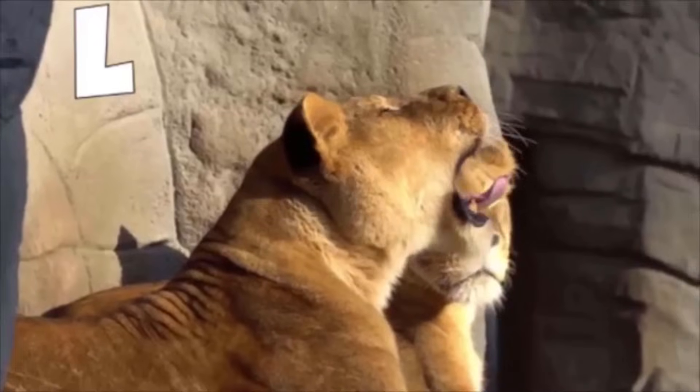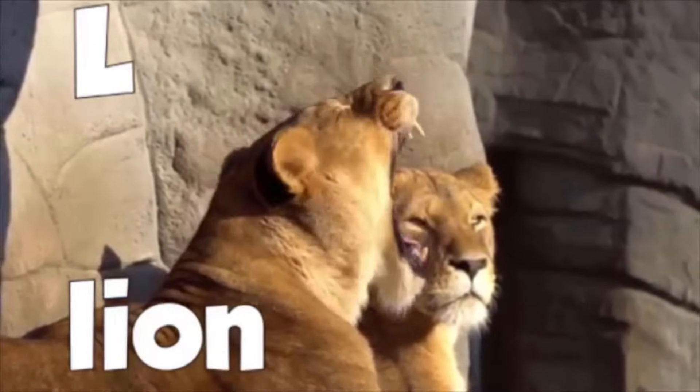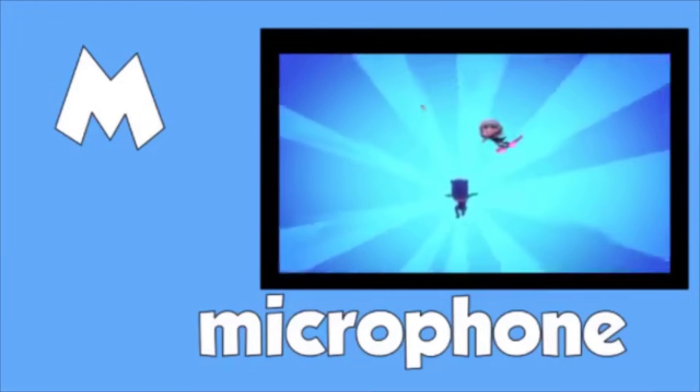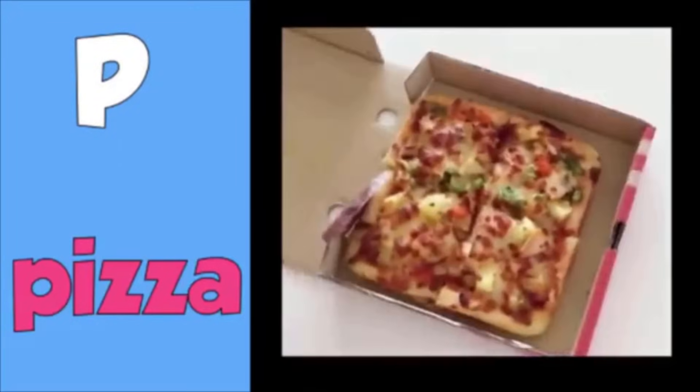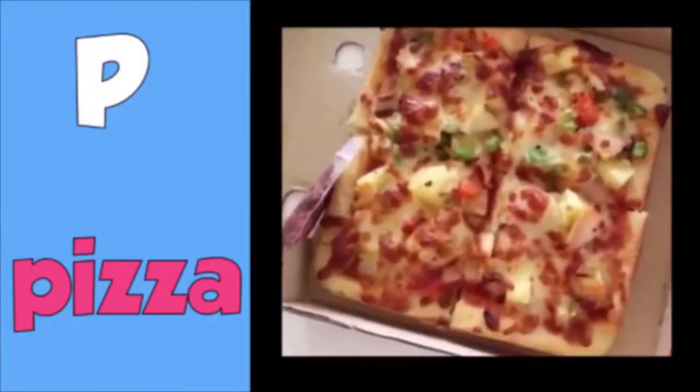L is for lion. M is for microphone, n is for nest, o is for open. P is for pizza, q is for quick.